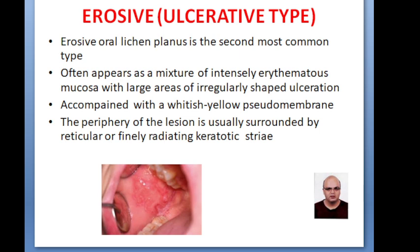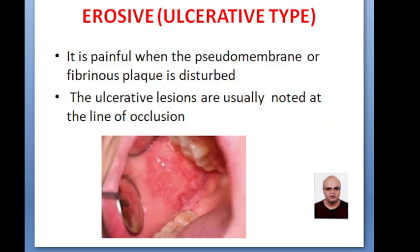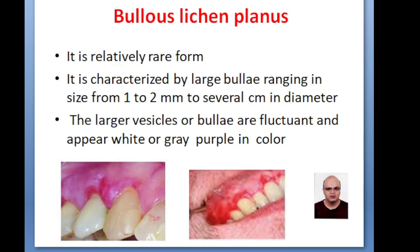The periphery of the lesion is usually surrounded by reticular or fine radiating keratotic striae. It is painful when the pseudomembrane or fibrinous plaque is disturbed. The ulcerative lesions are usually noted at the line of occlusion. The bullous Lichen Planus is a relatively rare form. It has large bullae ranging in size from 2 mm to several centimeters in diameter. If there are large vesicles or bullae, these are fluctuant and appear whitish or greyish-purple in color.